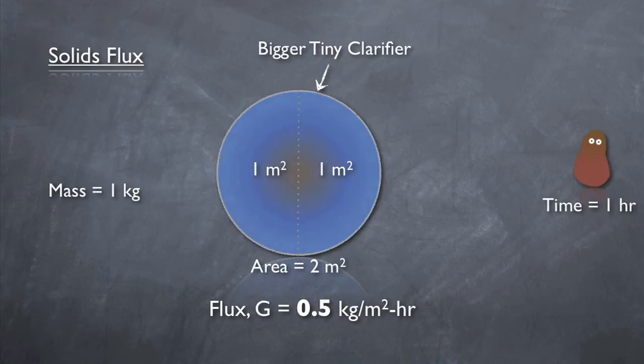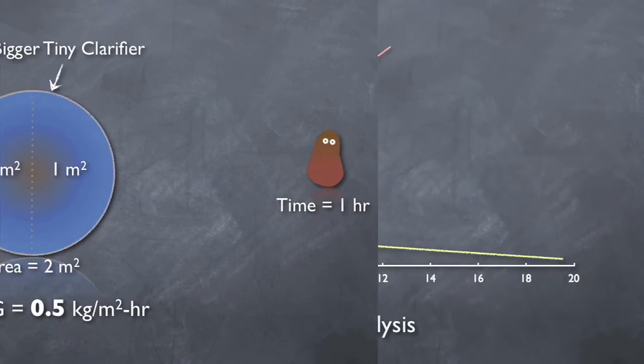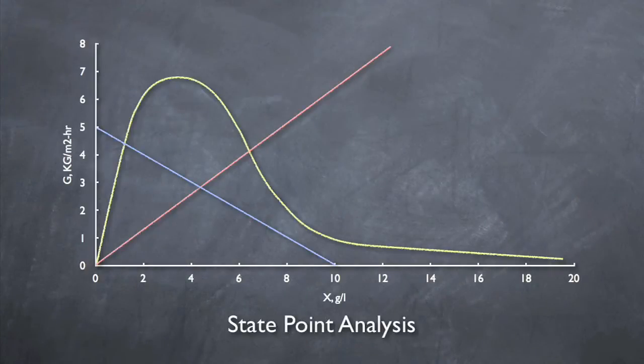By using flux, one can compare clarifiers of different sizes and loads on an equal basis. Now that we've covered both axes of the diagram, let's get to the three main components.